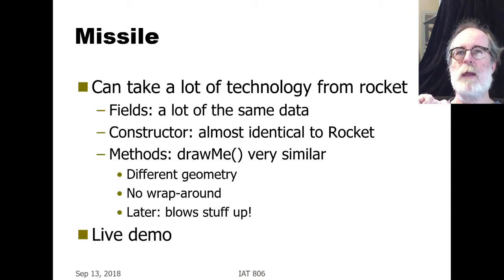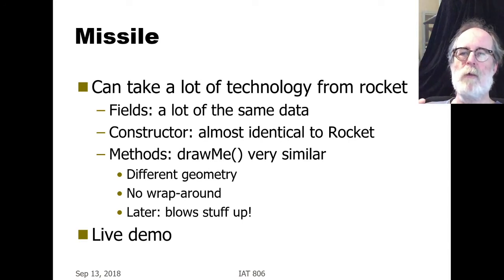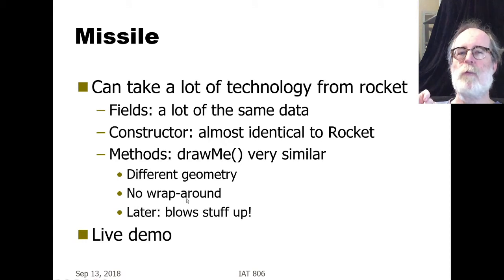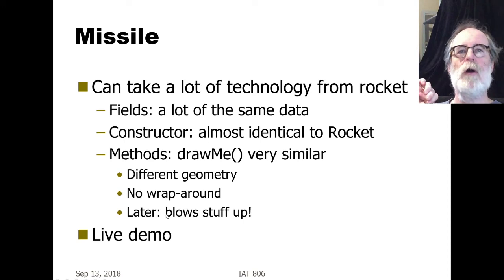To create a missile, we can take a lot of technology from Rocket and ArmedRocket — the fields are a lot of the same data. The constructor is almost identical to Rocket, and really the difference is the missile's behavior and interaction with the rest of the system. We won't show it blowing stuff up, but the geometry is going to be different — there's no wraparound. Once a missile hits a boundary, it just disappears, and later you would have it blow stuff up.